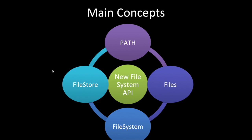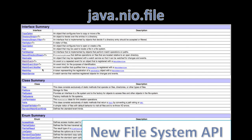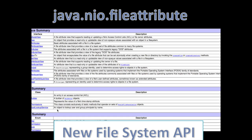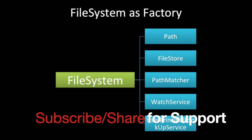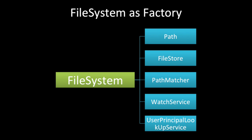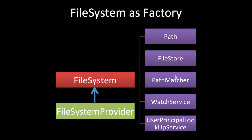JDK7 offers a new file system API consisting of FileStore, Path, Files, and FileSystem. There are others also like LinkPermission, SimpleFileSystem, and StandardWatchEventKinds. The FileSystem serves as a factory providing Path, FileStore, PathMatcher, WatchService, and UserPrincipalLookupService. There will be a provider based on the operating system — Mac OS provider for Mac, Linux OS provider for Linux, and so on.